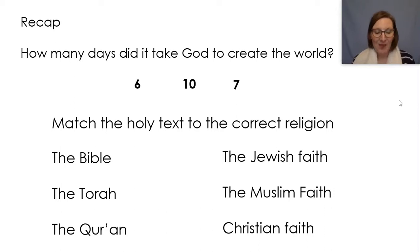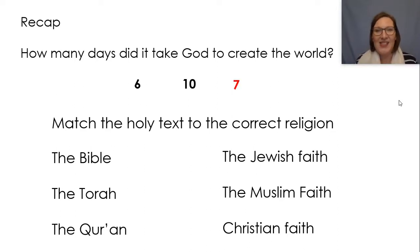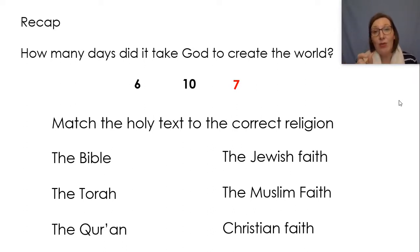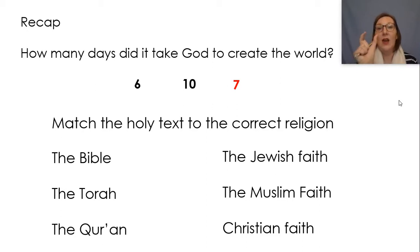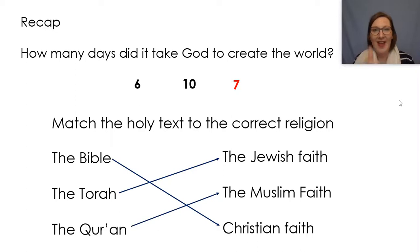Welcome back. Shall we mark together? Have you got a pencil and you can tick it if you've got it right? And if you haven't, that's not a problem. You can just circle the correct one or put the right lines to the correct word. So how many days did it take God to create the world? It took him six days, but in total on the seventh day, that was the day he rested and that was still important. So even though it took him six days to create, we have the cycle of seven days as his whole time. So match the holy text to the correct religion: the Bible matches to the Christian faith, the Torah matches to the Jewish faith and the Quran matches to the Muslim faith. Excellent, well done if you've got those correct.